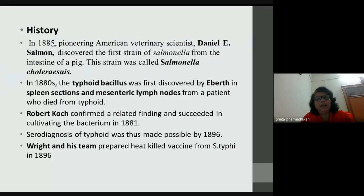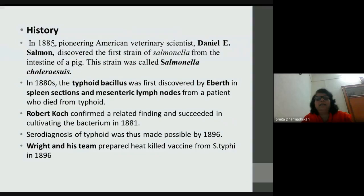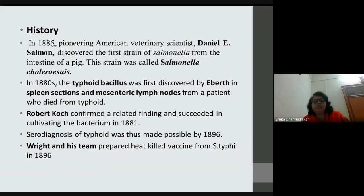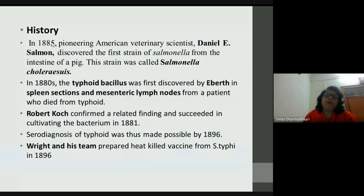In 1885, Daniel Salmon first discovered Salmonella from the intestine of a pig and named it Salmonella choleraesuis. In 1880, Eberth first identified the typhoid bacillus from spleen sections and mesenteric lymph nodes of a patient who died of typhoid. The pathogenicity of this typhoid bacillus was later confirmed by Robert Koch through his postulates, and the bacterium was successfully cultivated in 1881.